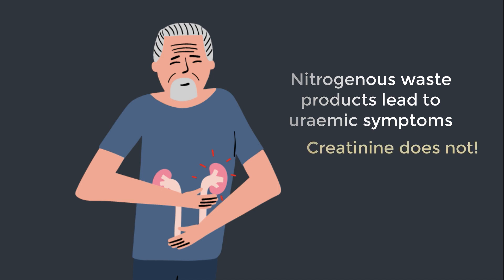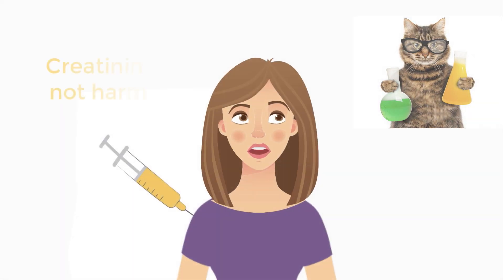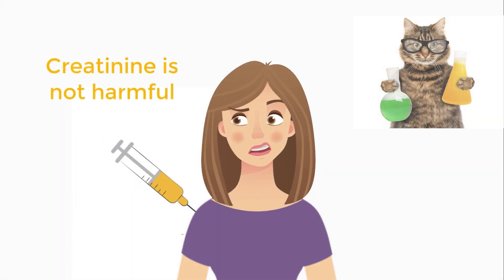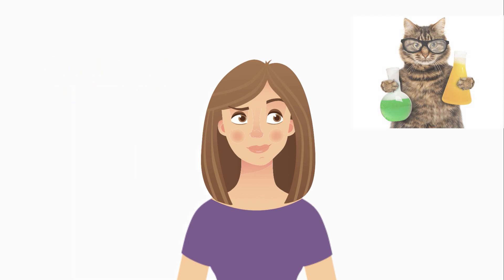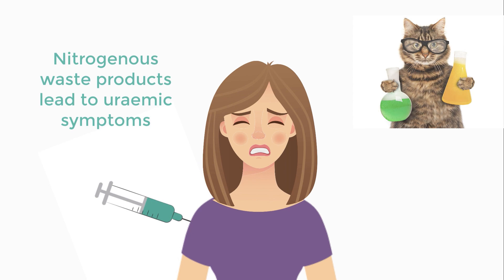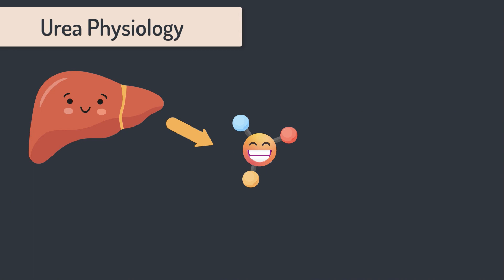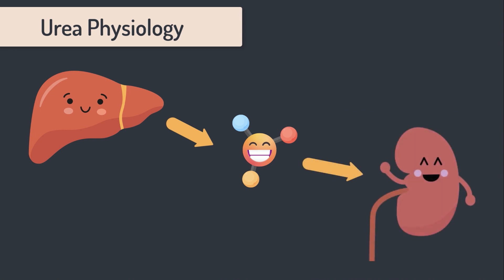And that is so different from creatinine. If I injected you with a big syringe of creatinine, nothing would happen — it's not a harmful molecule. But if I injected you with a big syringe of nitrogenous waste products, that's a lot more noxious. So urea is a nitrogenous waste product made in the liver, and in health we get rid of urea via the kidney.